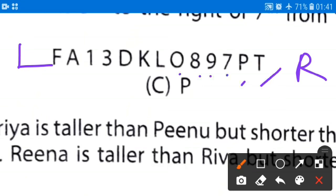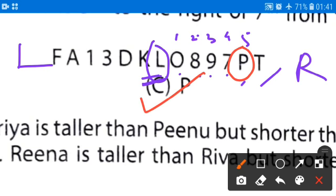Seven to the right means this is the first, second, third, fourth, fifth, sixth and seventh. L is the seventh position from the right and from here we have to move five position right. This will be first, second, third, fourth and fifth. The correct answer is P. Option C is the correct.